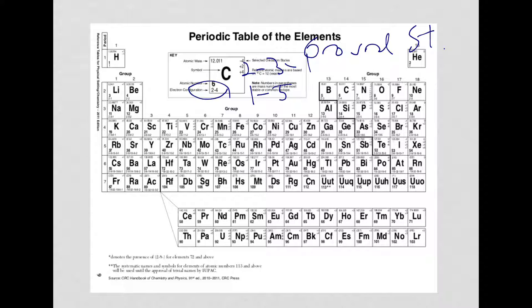So your ground state electron configurations are right in front of you. Of course, the atomic number gives the number of protons. Atomic mass, you can round it to get the mass number.